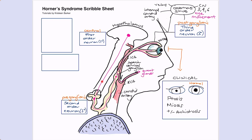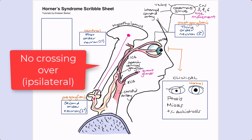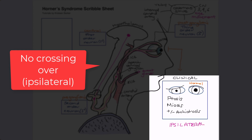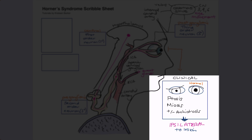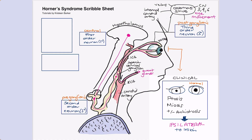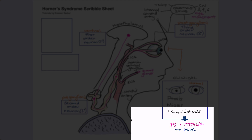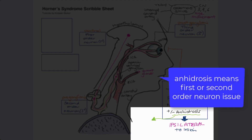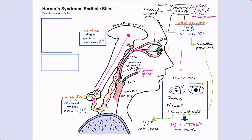There are two very important things to notice. First, from the hypothalamus all the way to the face there is no crossing over — all of this is happening on the same side. It is ipsilateral. So regardless of whether it's a central or peripheral lesion, Horner's syndrome is always ipsilateral to the culprit lesion. Second, because the nerves affecting facial sweating branch off at the end, Horner's syndrome should only feature anhidrosis when first or second order neurons are affected. If sweating is preserved, we're thinking this is likely a third order neuron problem.